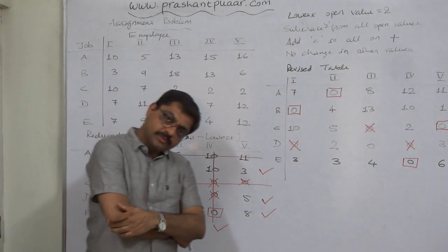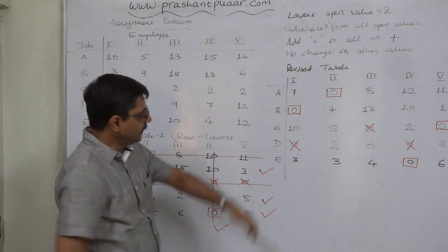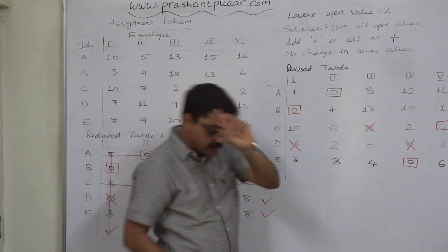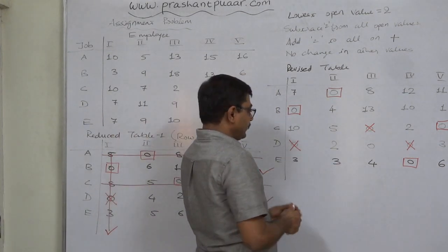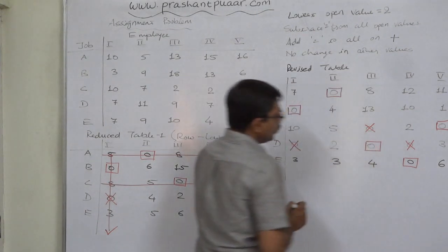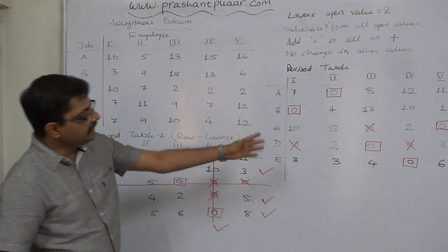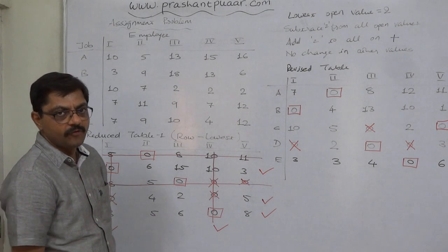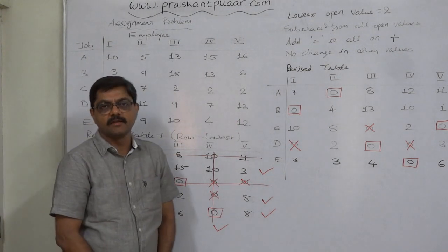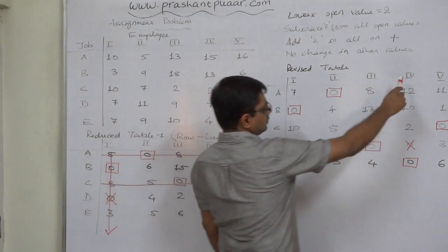Now looking at single zeros after cancellation: rows 1, 2, 3 have no outstanding zeros. In row 4, after cancellation there is one zero left — make the assignment, no other zeros in the column to cancel. All zeros have either been assigned or cancelled.